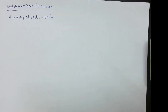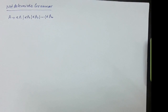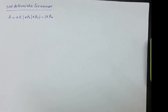Hello everyone. In this lecture, we will learn about deterministic and non-deterministic grammar. Deterministic means that whenever we are doing the derivations, we are sure about which productions will be used. But if we are not sure about which productions to be used for the derivations, then that grammar will be the non-deterministic one.